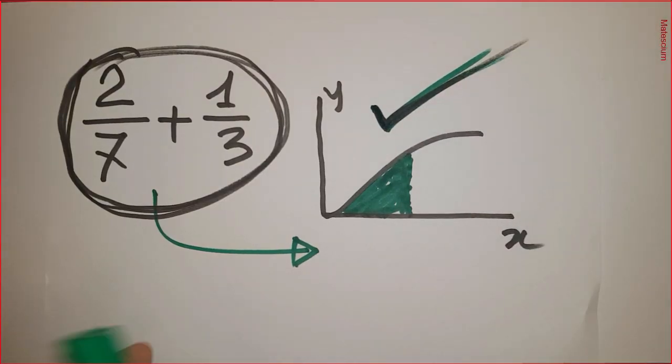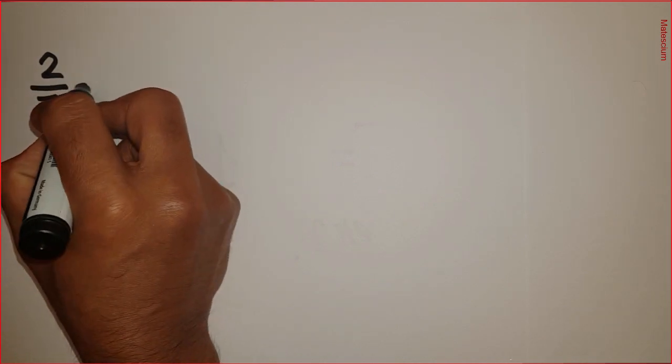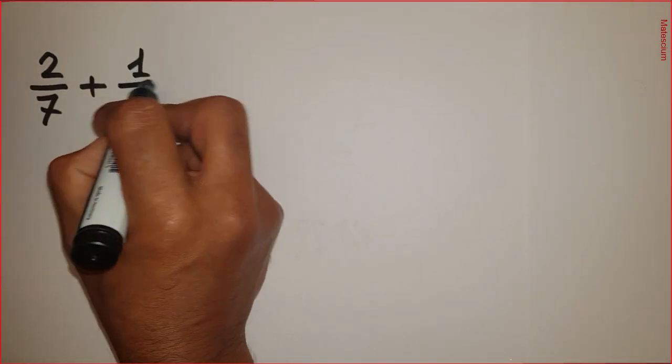To give a graphical explanation of this fractional addition, let's rewrite this fraction again here: 2 over 7 plus 1 over 3.